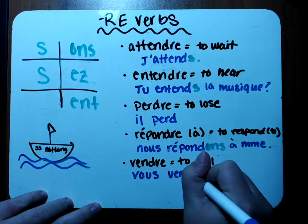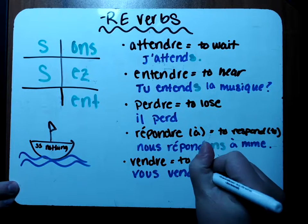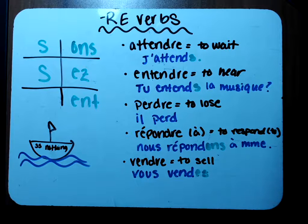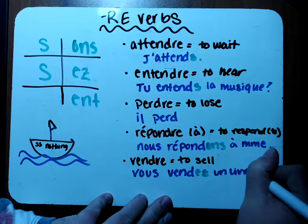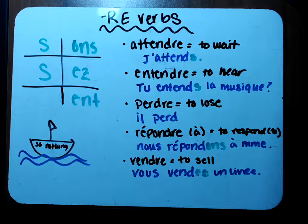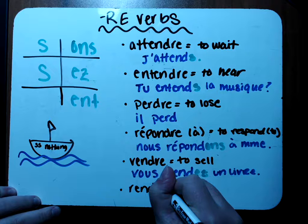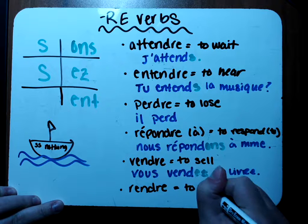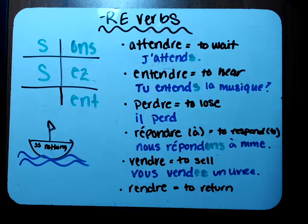Sixth — we have 'rendre,' which means to return, like 'I'm going to return your work to you.' Let's say the girls return the ball — so: elles. Write your verb minus the RE: rend. Add your new ending: ENT. Elles rendent — and we could say the ball: le ballon. Elles rendent le ballon.